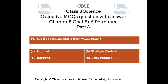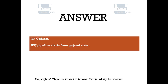Question number 10. The HVJ pipeline starts from which state? Option A: Gujarat. Option B: Madhya Pradesh. Option C: Haryana. Option D: Uttar Pradesh. The right answer is Option A, Gujarat. The HVJ pipeline starts from Gujarat state.